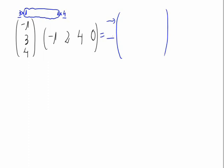Those are the 3 and the 4, so this is 3 lines and 4 columns. We will have an element here, and here, and here, and here, and the same until we have every element filled in.